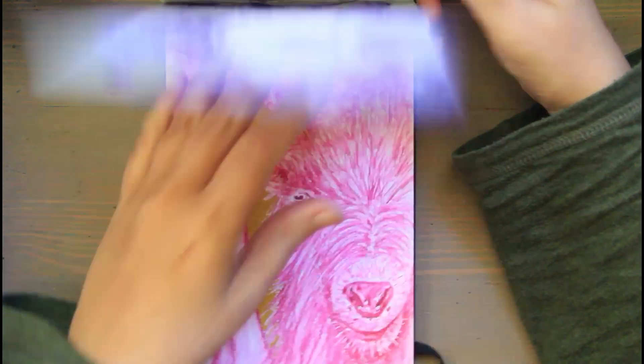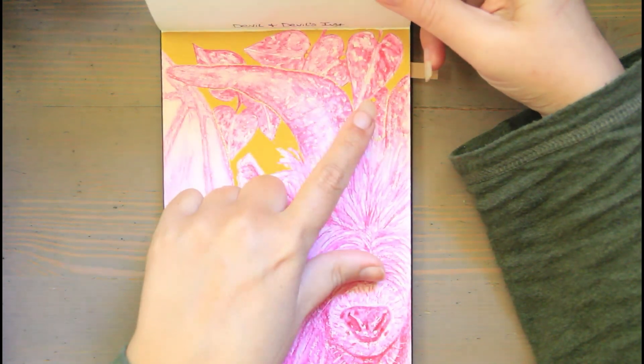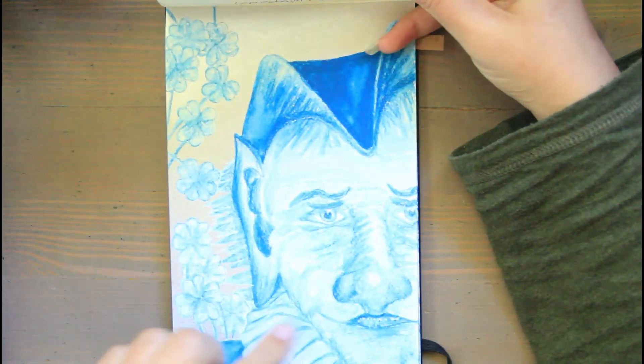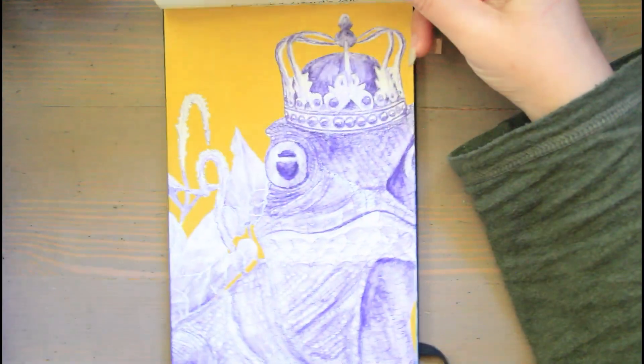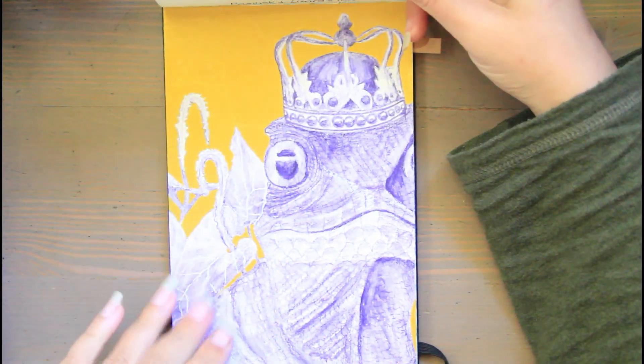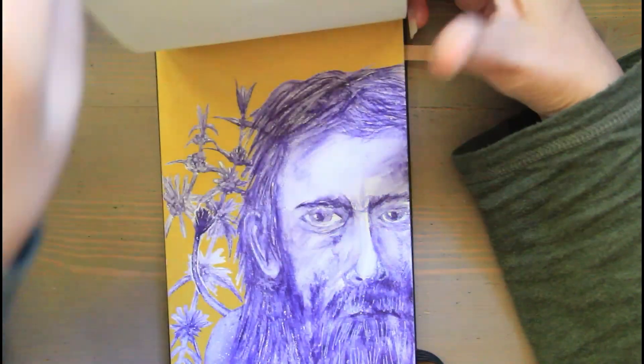This is a devil with devil's ivy—I mean, all ivy is a devil if you ask me. Pink. This is leprechaun and clover—blue. This is a basilisk and this is lizard's tail, it's a plant—purple. So I have a repeating pattern of pink, blue, purple.